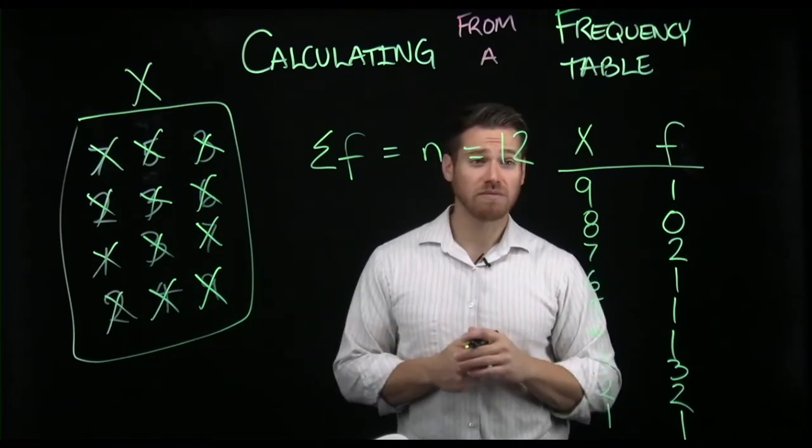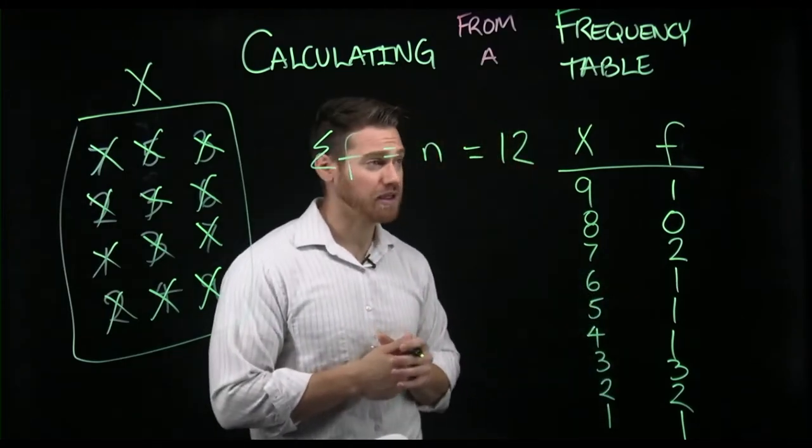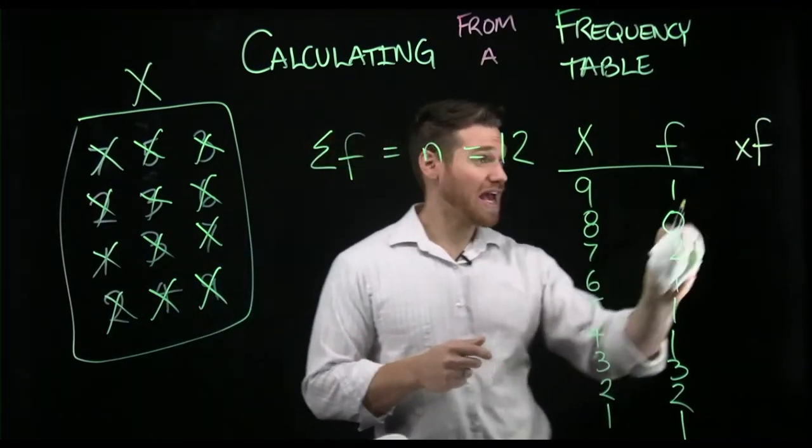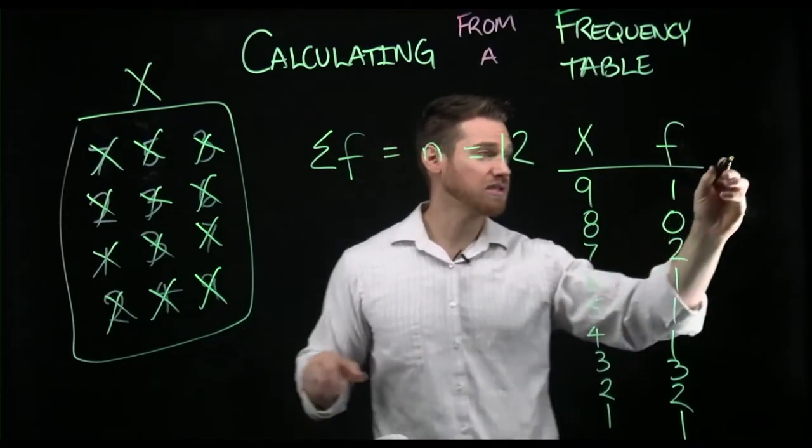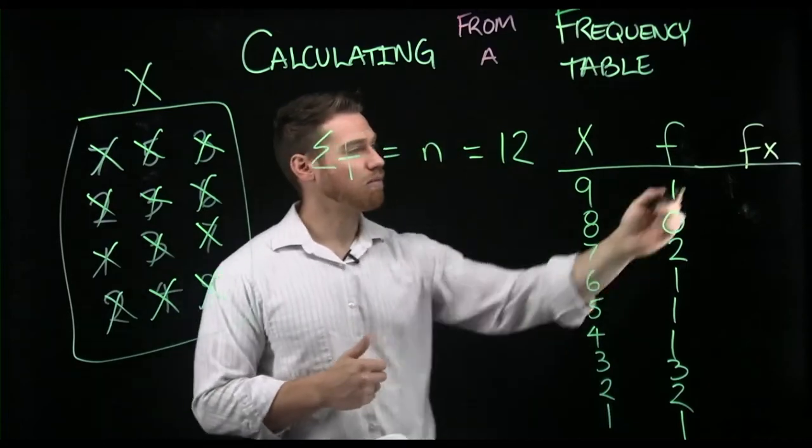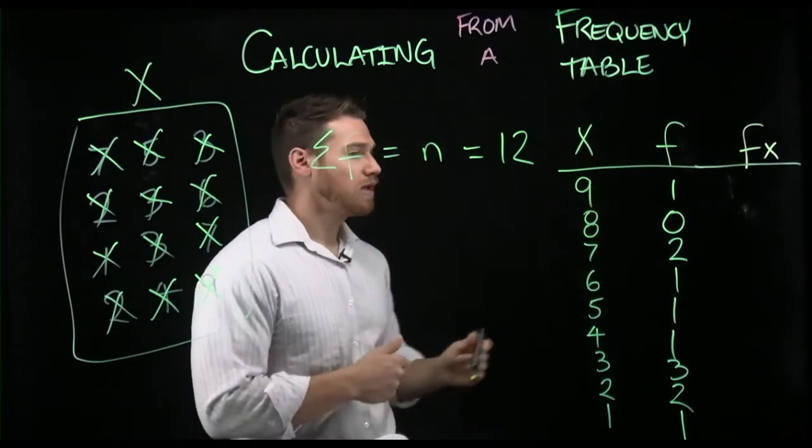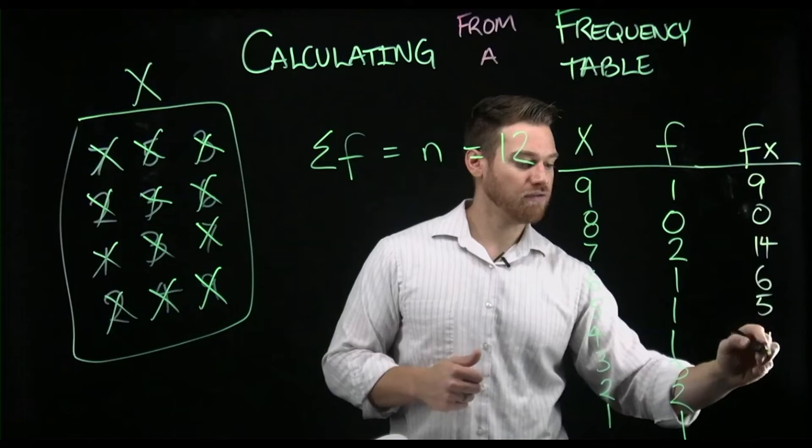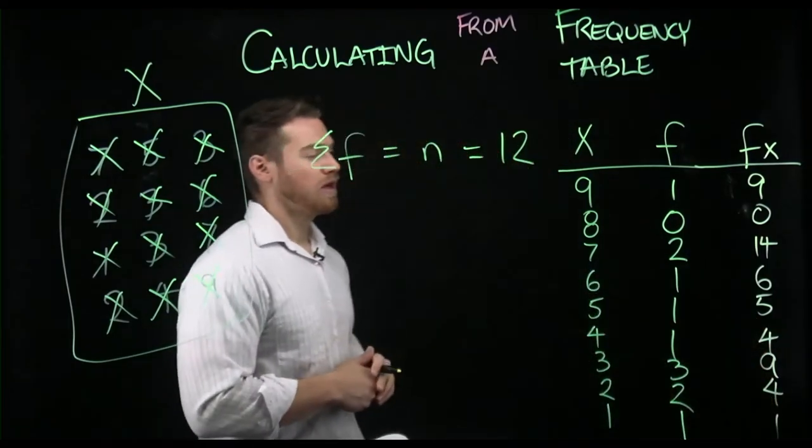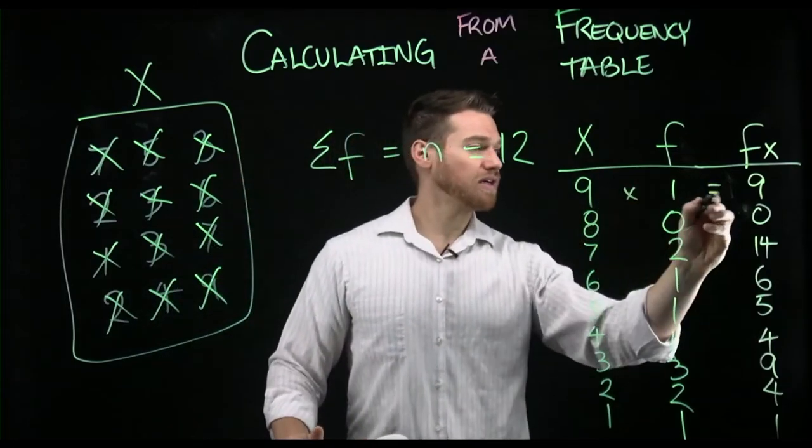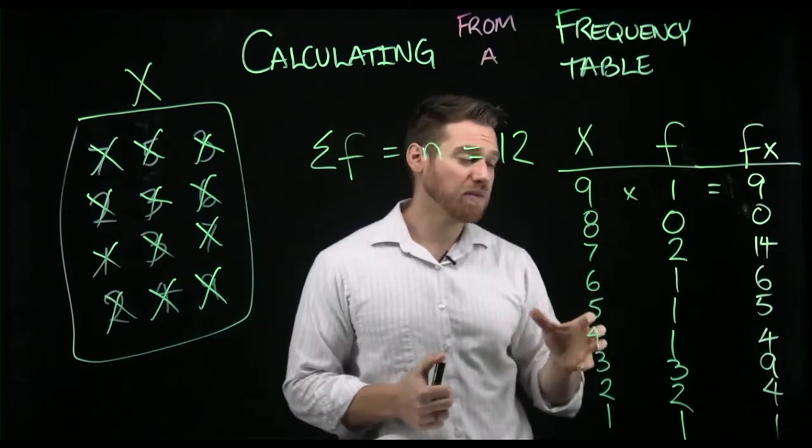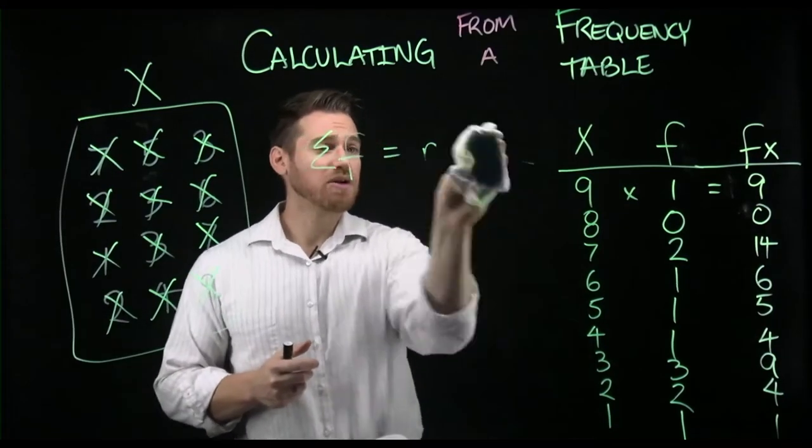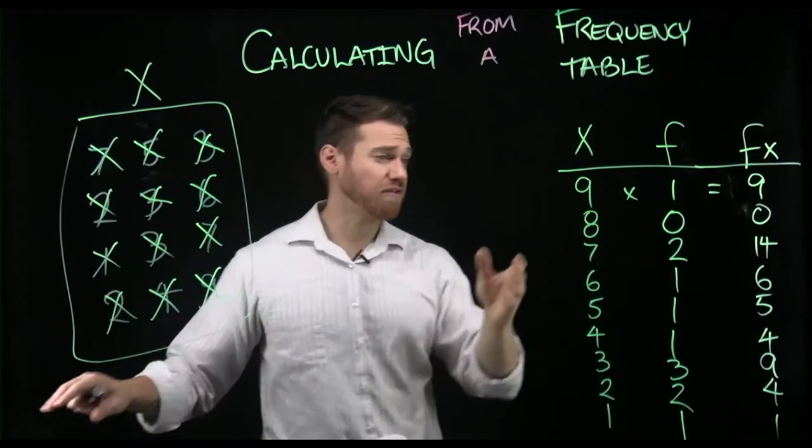I can get, for example, the sum of all of the scores of x. Well, how might I do that quickly? One of the quickest ways is to make a new column that is x times f, or a lot of times written as fx, not f of x, so no parentheses. Your book often does this. All that's trying to tell you is that we're going to multiply these two columns. So 9 times 1 is 9, 0, 14, 6, 5, 4, 9, 4, 1. All I've done there is multiplied across. And what this is doing is quickly giving me a way to get the value of x's. Multiplication is basically a fast way to add.